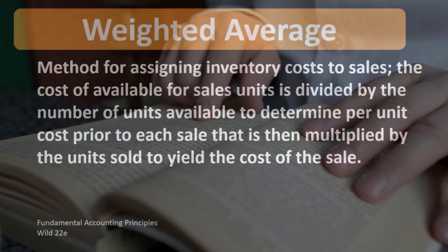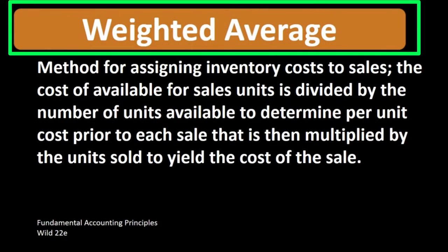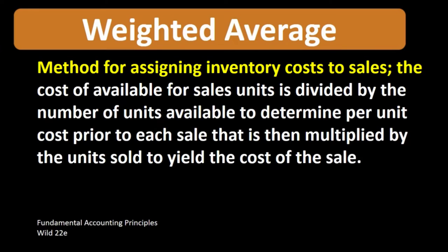According to Fundamental Accounting Principles Wild 22nd Edition, the definition of weighted average is method for assigning inventory costs to sales. The cost of available for sale units is divided by number of units available to determine per unit cost prior to each sale that is then multiplied by the units sold to yield the cost of the sale.